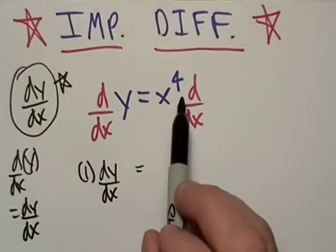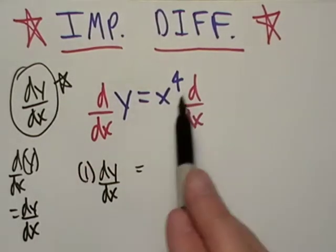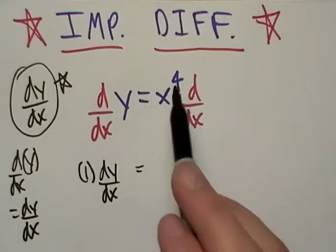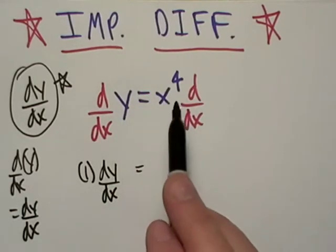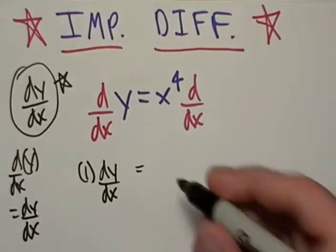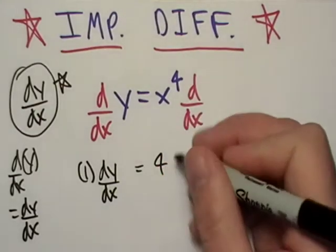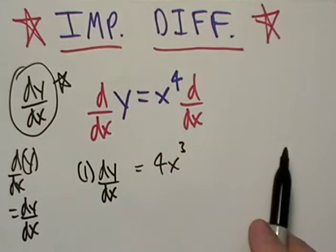Now here, since we're all after dy/dx, well, that's fine. I can take the derivative of x to the fourth with respect to x because I've got x right here. So I just write 4x to the third. Just use my power rule.